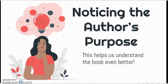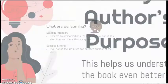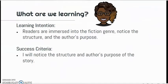We are noticing the artist's purpose. This helps us learn to understand the history of the genre. What are we learning? Learning in fiction. Reading and learning words into the fiction genre — notice the structure and the artist's purpose. Success criteria: I will notice the structure and artist's purpose of the story.